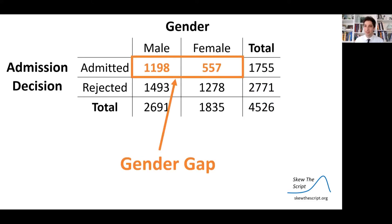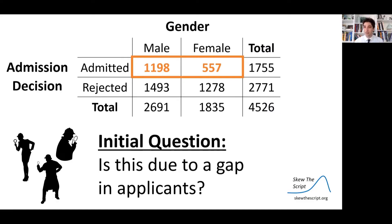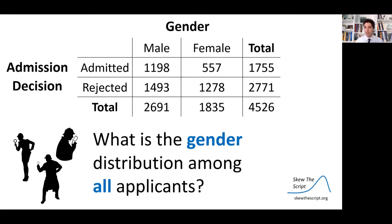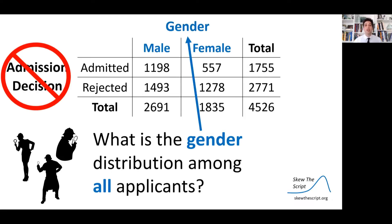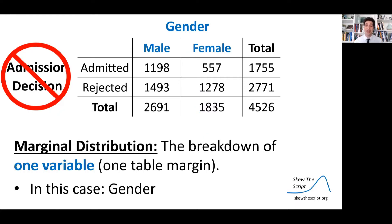This is the gender gap described at the outset of the lesson — the number of admitted male students versus admitted female students. The initial question researchers had was: is this due to a gap in applications? Maybe it has nothing to do with the admissions process at all — maybe it's just the composition of people choosing to apply. So they want to ask: what was the gender distribution among all applicants? We're going to calculate a marginal distribution — a breakdown of one variable, in this case the gender margin.